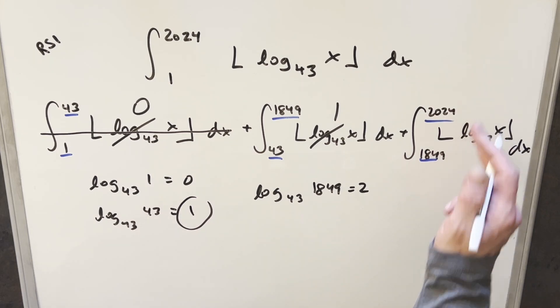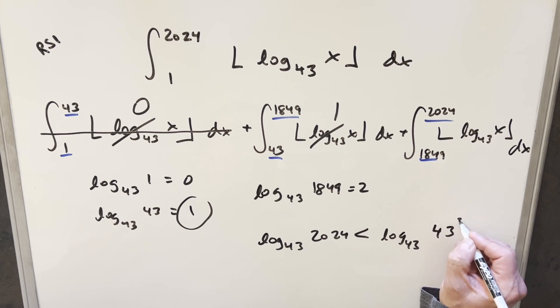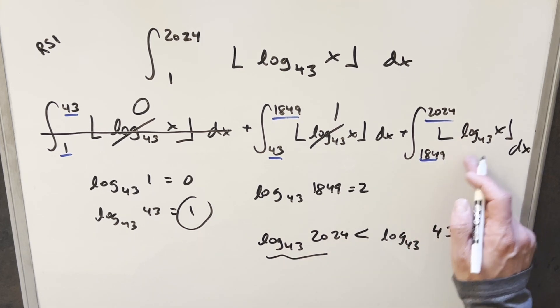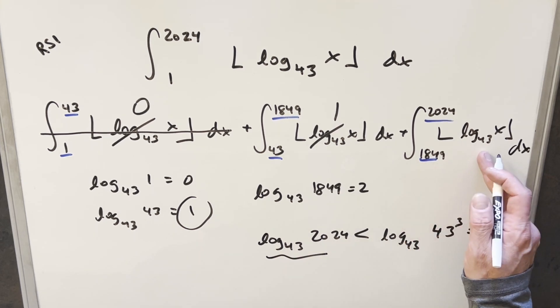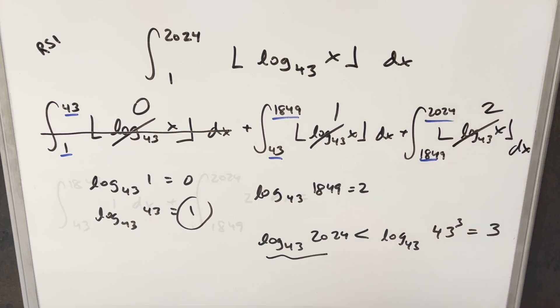Now for this last integral, we don't know exactly what's happening at log 43 of 2024, right? But we do know that this is less than, this is going to be less than log 43 of 43 cubed, or whatever that is. And we know this value here is 3. So this here has to be less than 3. And this value here, log 43 of 1849 is going to be just 2. So what's going to happen here, everything's going to round down, and this integral is just going to become 2.